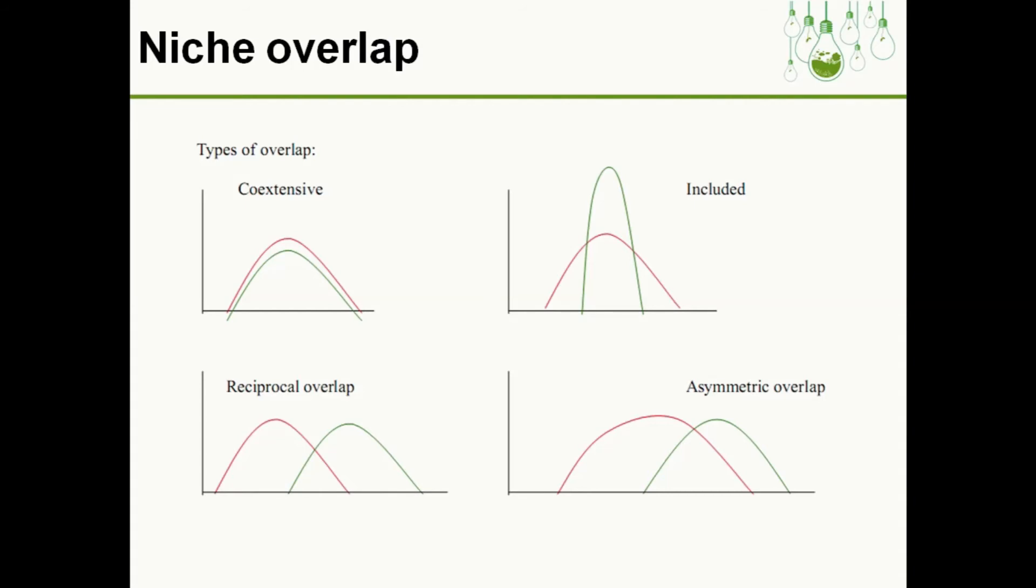Included is when one species' feeding type is included under another. For example, species A feeds on five fruits, whereas species B feeds on only two fruits, and these two fruits are within the five fruits eaten by species A.